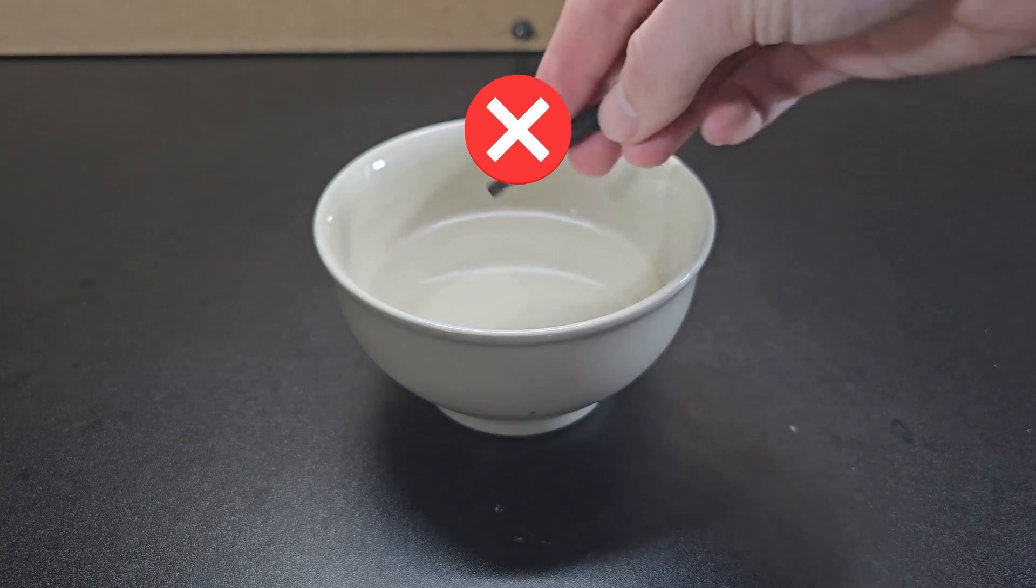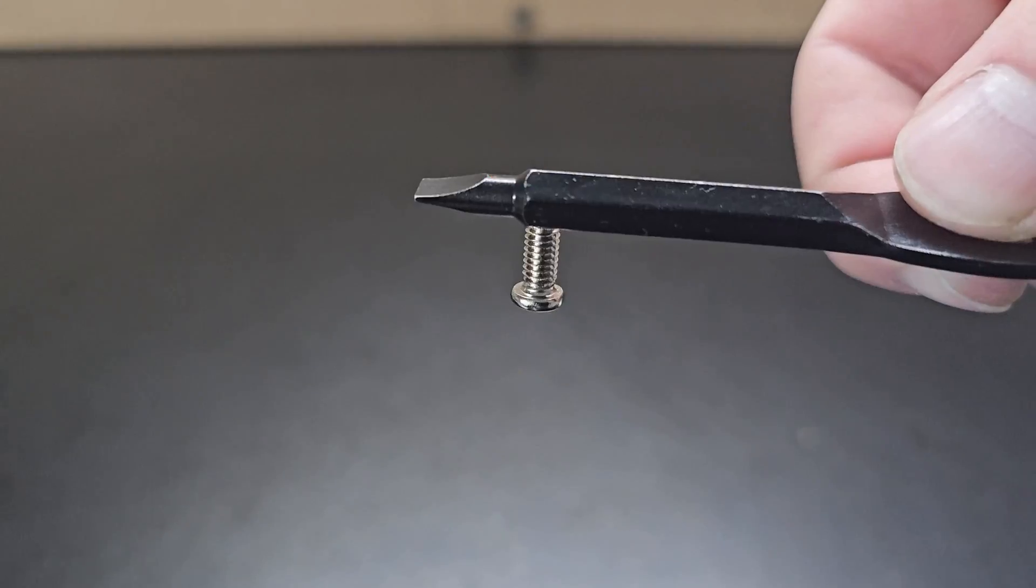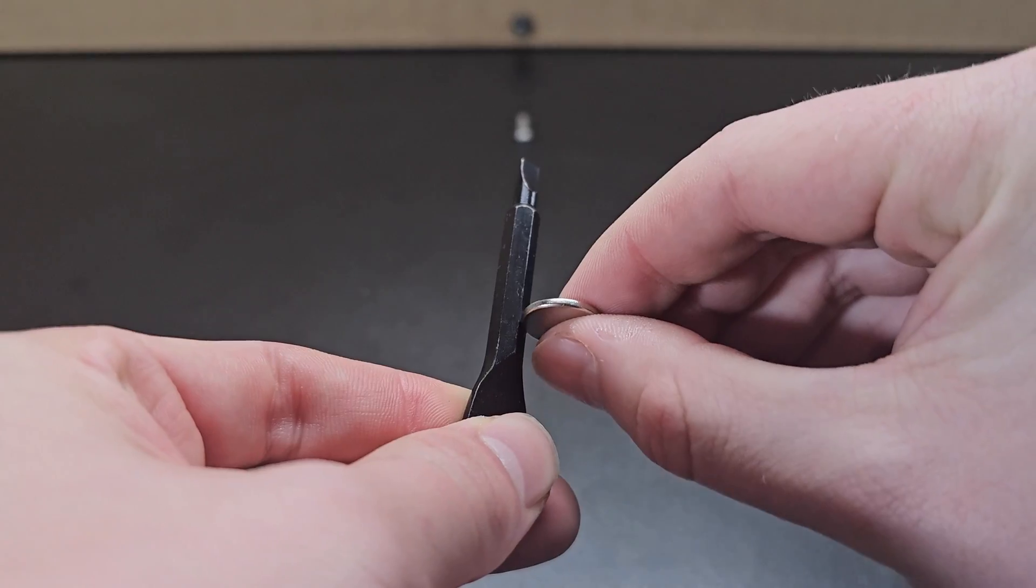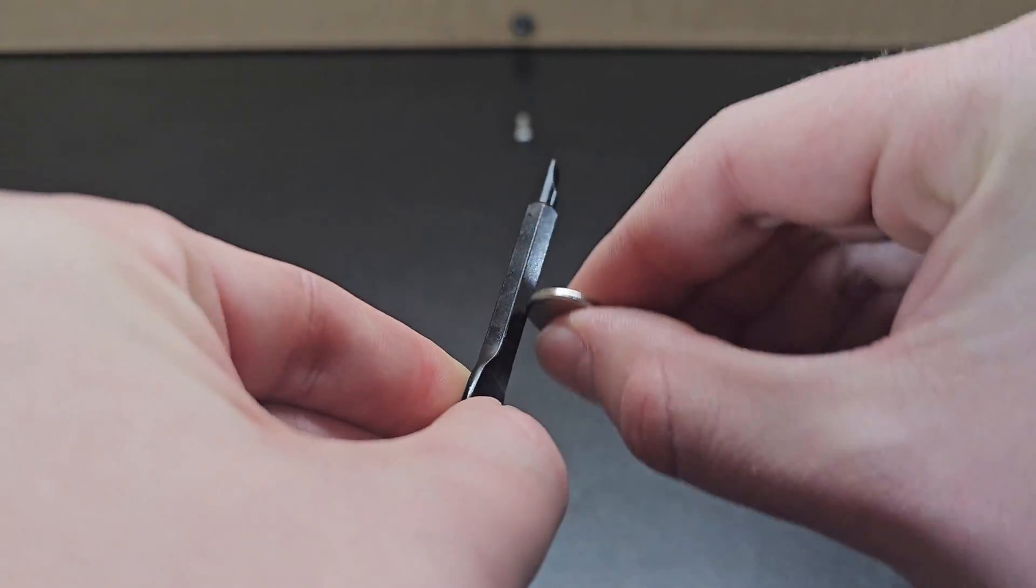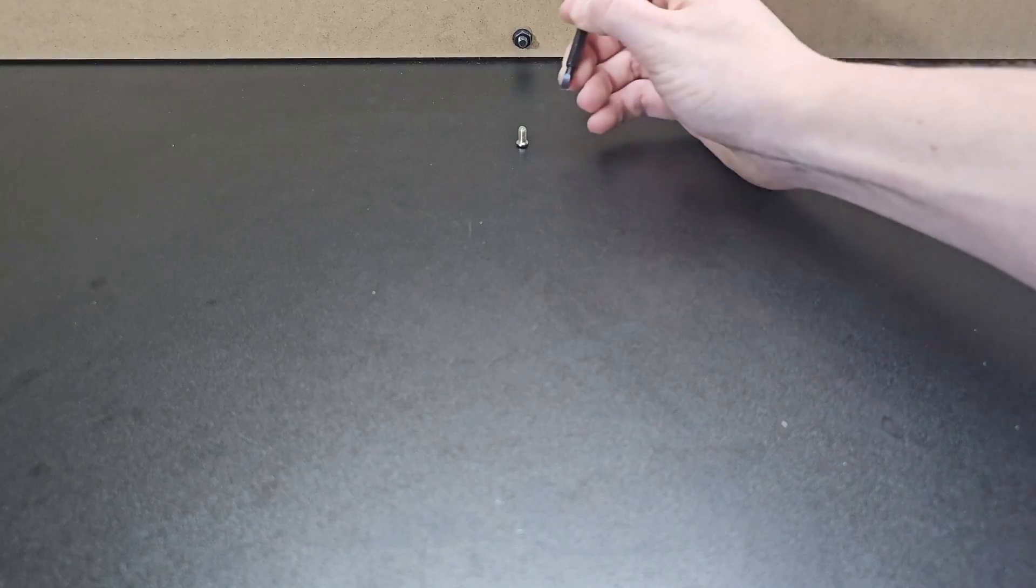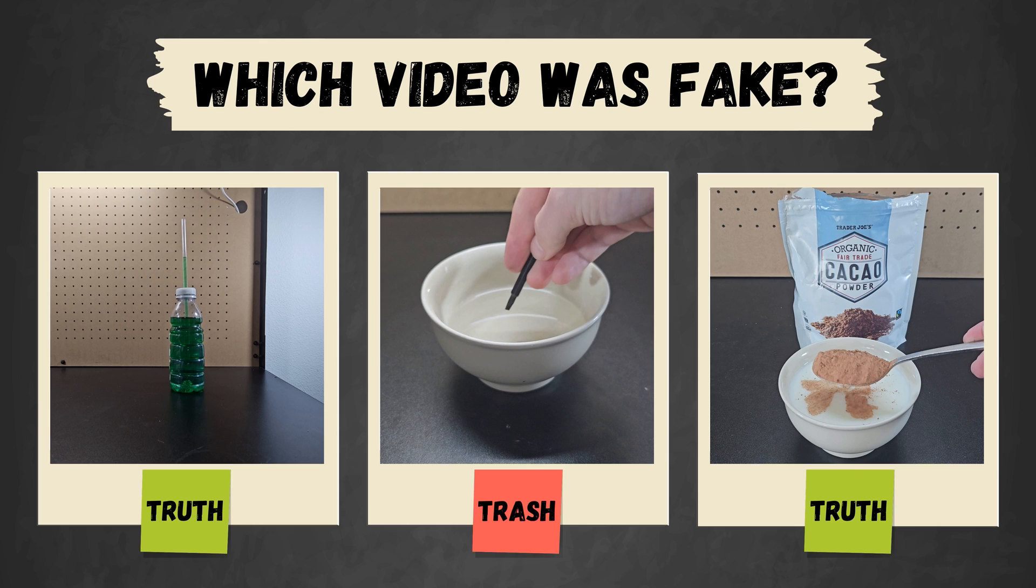That means you can't demagnetize a screwdriver by putting it in water. The actual way I demagnetized it was by rubbing the magnet on it again, except rotating the magnet on its side like this. This removes the alignment of the iron atoms as discussed before. Here's a quick recap to help you follow before moving on to the next round. Now it's time for the final round, round 3.